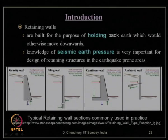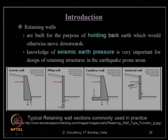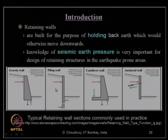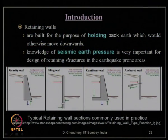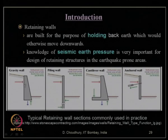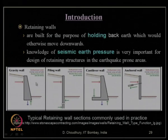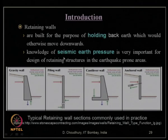The gravity type is a rigid wall, while the anchored sheet pile wall is a flexible wall — as learned in conventional geotechnical engineering. We will now focus on how seismic earth pressure needs to be calculated, i.e., what changes in earth pressure values occur when considering the effect of earthquake or seismicity.